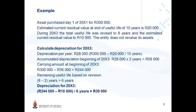Let's look at an example. An asset was purchased on day one of 20X1 for 300,000 rand. The original estimated residual value at the end of the estimated useful life of ten years is 20,000 rand. During 20X3, the total useful life was revised to eight years and the estimated residual value changed to 10,000 rand. IAS 8 says you must revise the year in which the estimate changed as well as all future periods.